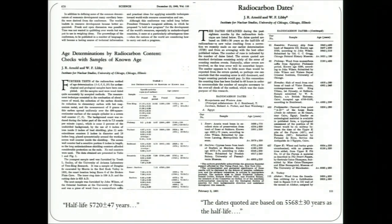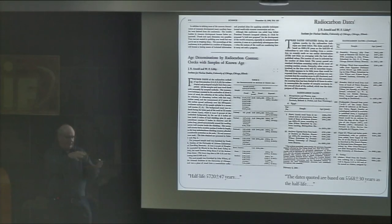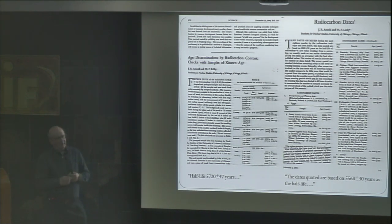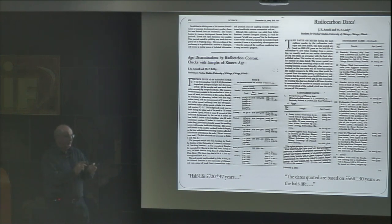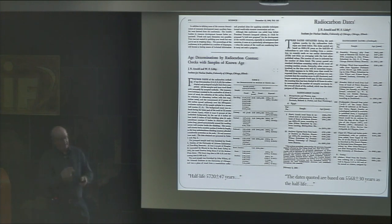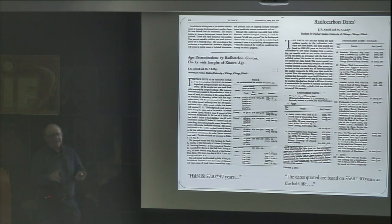The measurement was done by counting beta decays from the amorphous carbon coated on the walls of the counter. They produced the graphite from CO2 by reacting it with magnesium. The CO2 was collected from biogas basically from the sewers and from dead petroleum gas — those were the two original samples.